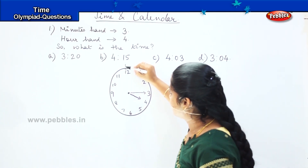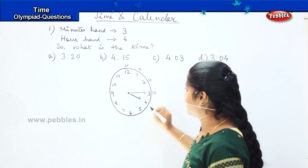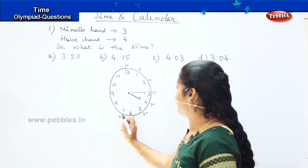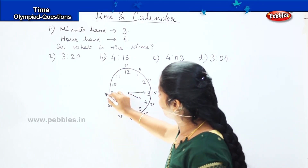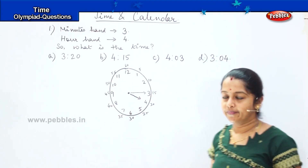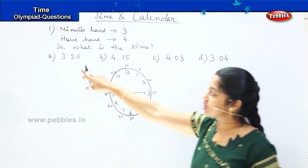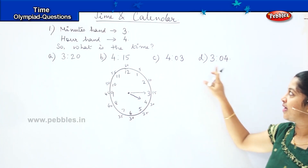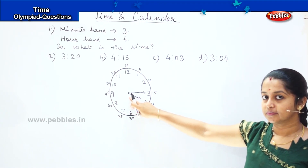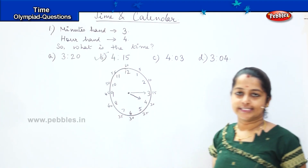So we will be skip counting from 5 — 5, 10, 15, 20, 25, 30, 35, 40, 45, 50, 55, and 60. So my hour hand is at 4 and my minutes hand is at 3, and my options are 3:20, 4:15, 4:3, and 3:4. The answer is 4:15, which means my second option is the right one.